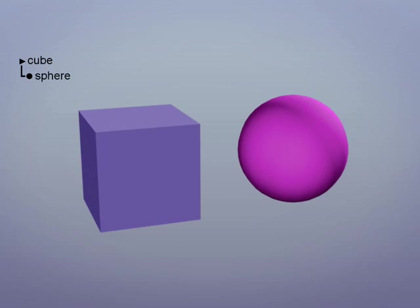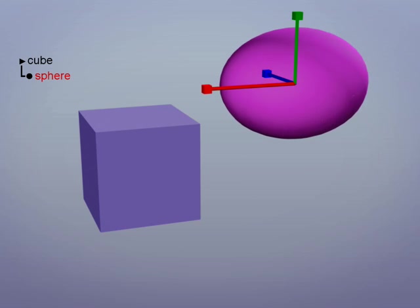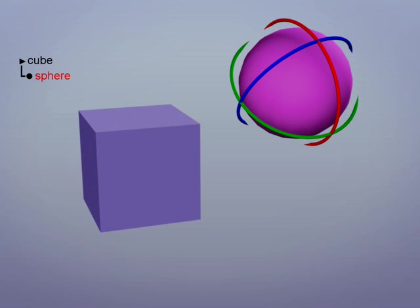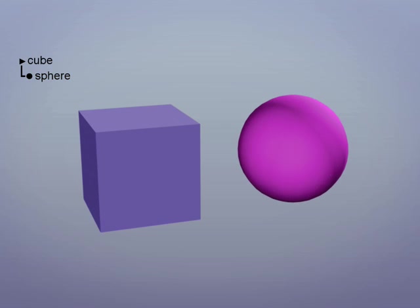This is called a parent-child relationship. The parent is the object that's on top of the hierarchy, and in this case, it's the cube. The child is on the bottom, and here it's the sphere. Let's grab the sphere and move, scale and rotate it. As we can see, it has no influence over the cube, which is its parent.